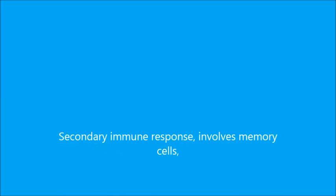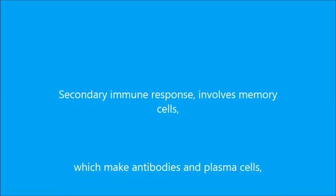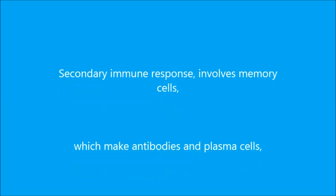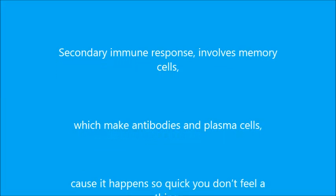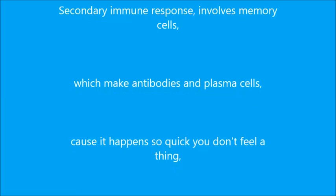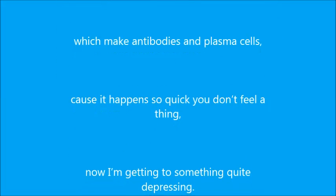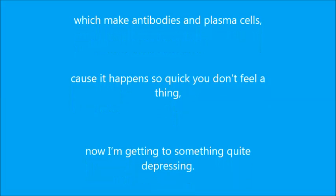The secondary immune response involves memory cells which make antibodies and plasma cells. It happens so quickly you don't feel a thing.